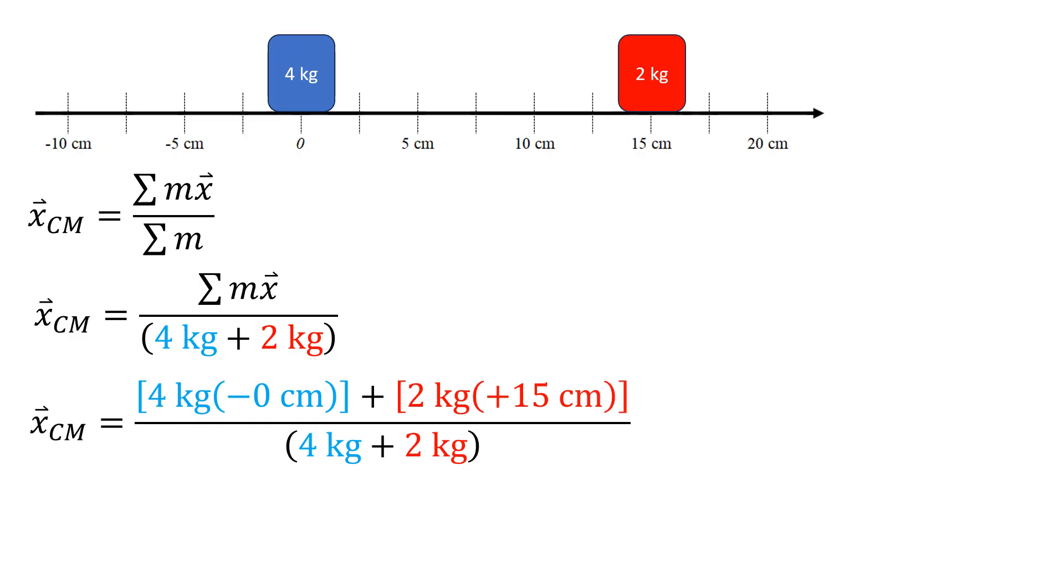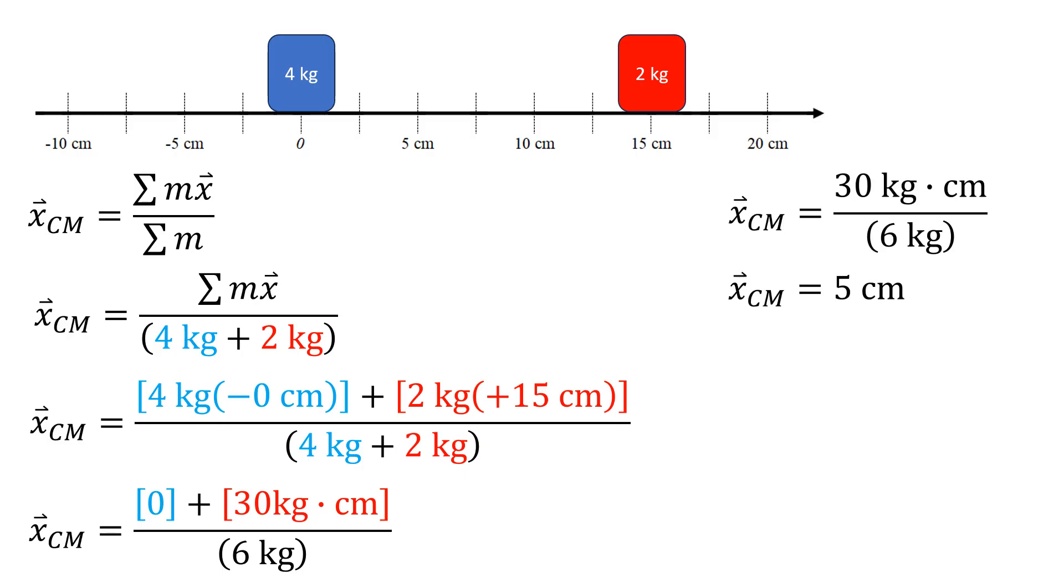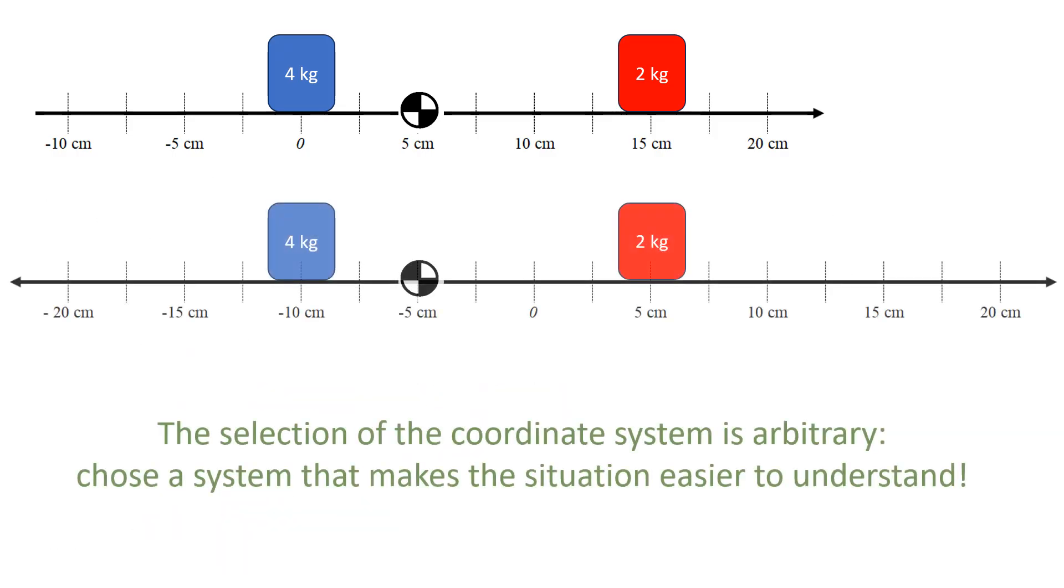Notice that in the substitution the blue term is going to end up being zero, because the four kilogram object is now at zero, and the red one is going to have a position of 15. I'm going to get a different number here, five centimeters, so the center of mass is now at the five centimeter position. But if we superimpose these two pictures over each other, it's the same position. I've just changed what that position is relative to when I moved my coordinate system around.